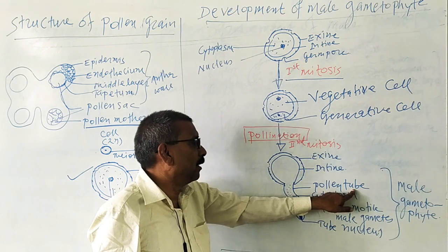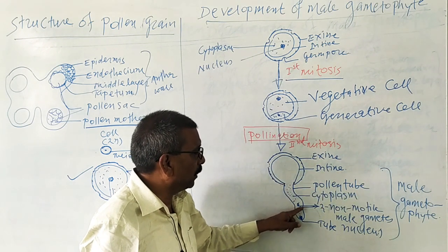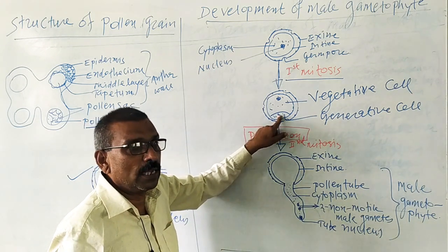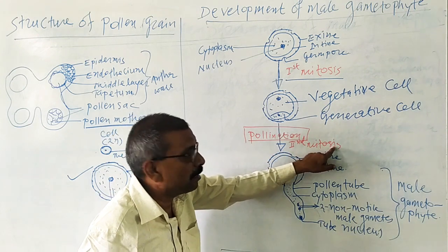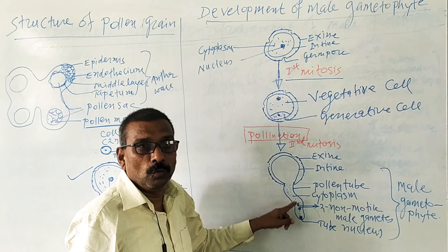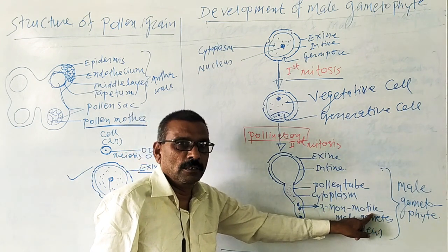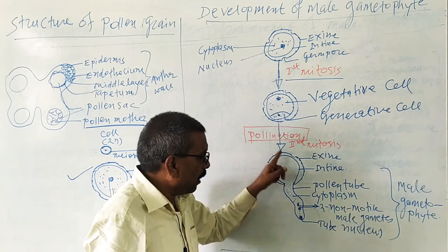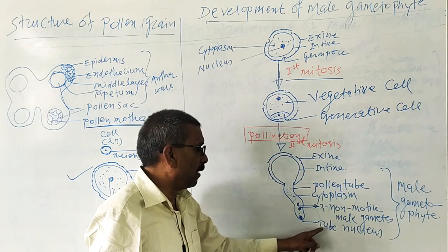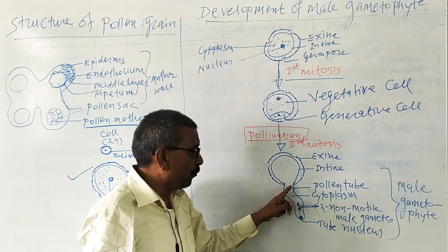The contents of the intine — that is, the cytoplasm — migrate into the pollen tube. At the same time, the nucleus of the generative cell divides by a second mitosis cell division and gives rise to two non-motile male gametes. The pollen tube now contains cytoplasm, two non-motile male gametes, and the tube cell nucleus.